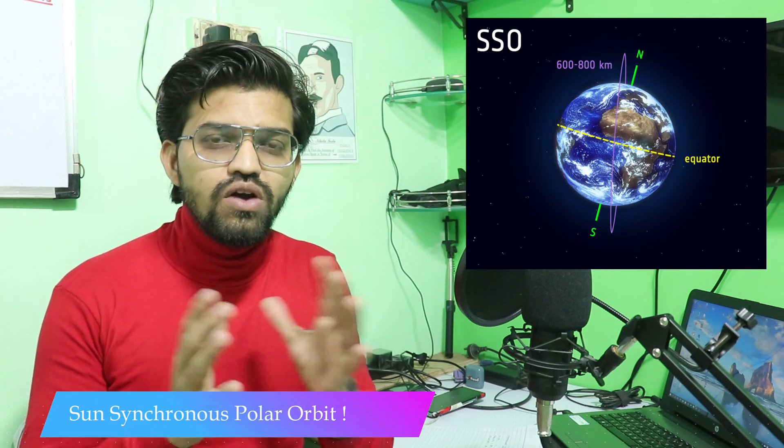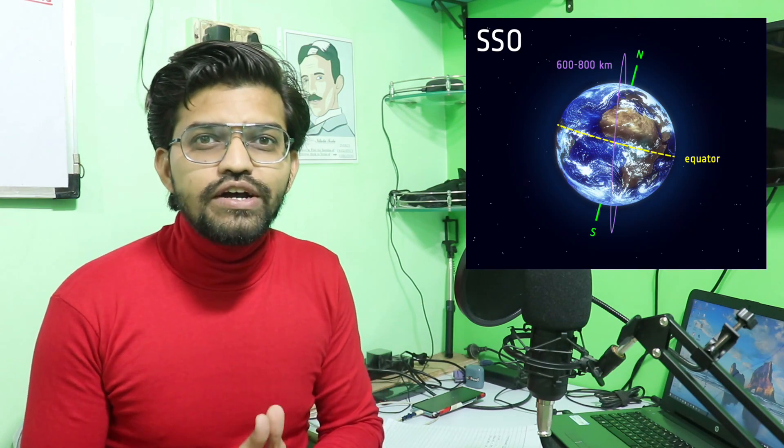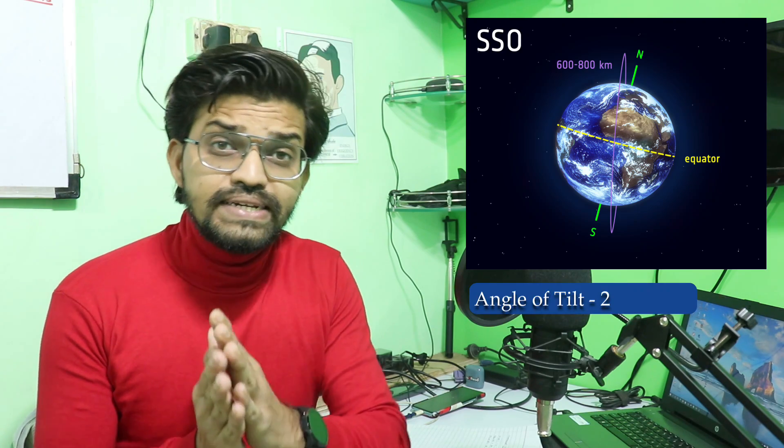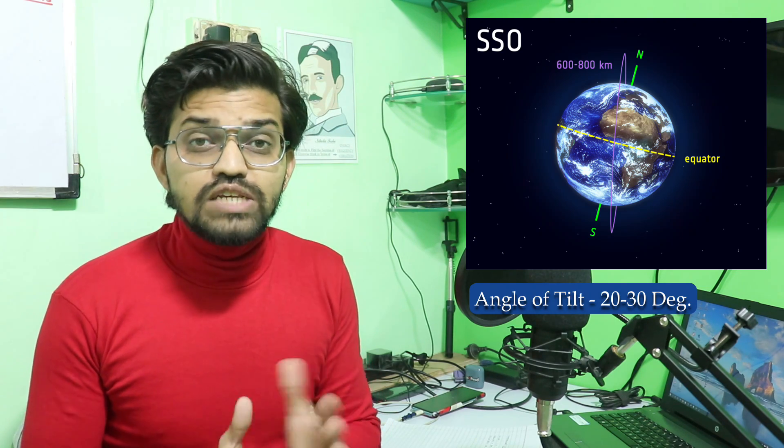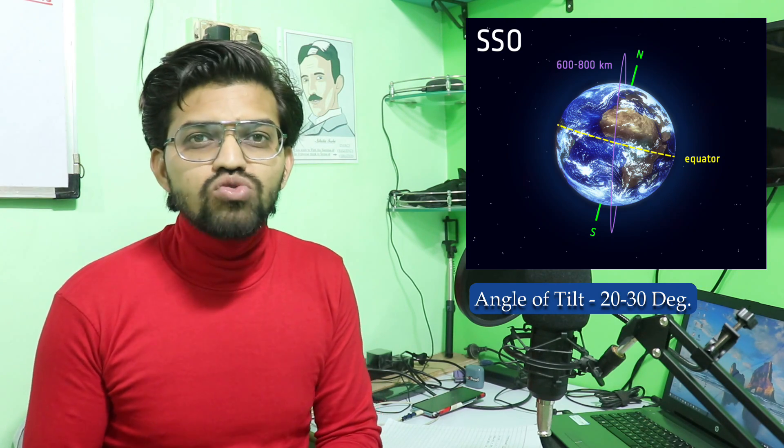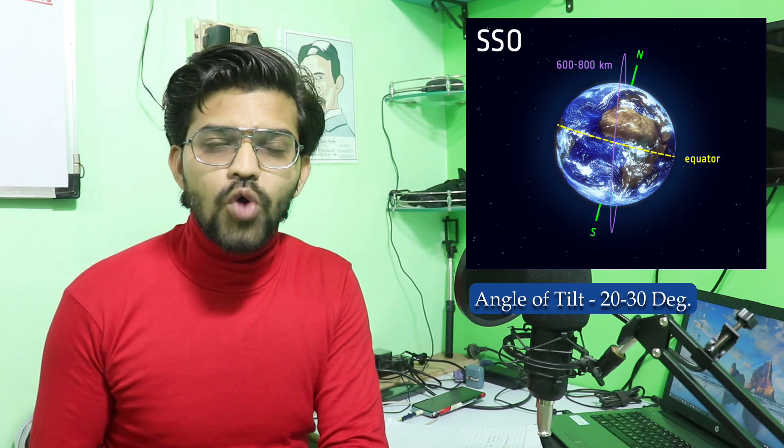In this particular video we are going to learn about a polar orbit — we can call it a sun synchronous polar orbit. This particular orbit is not exactly the polar orbit belonging to the north and south poles; this orbit is tilted by 20 to 30 degrees. So in this video we are going to learn about the sun synchronous polar orbit.